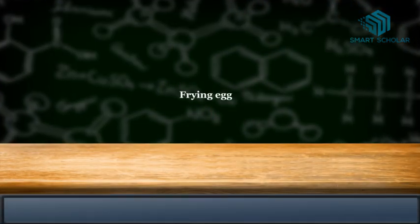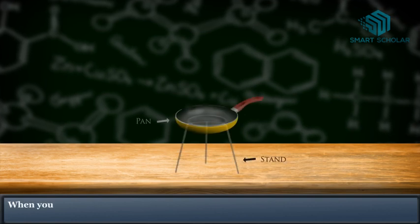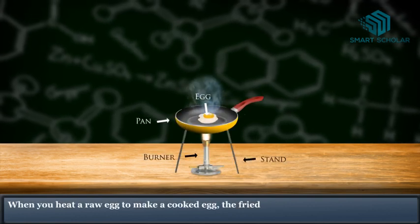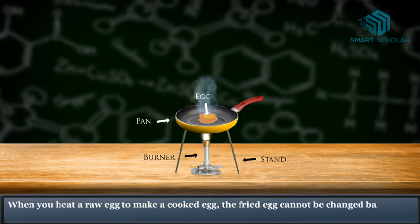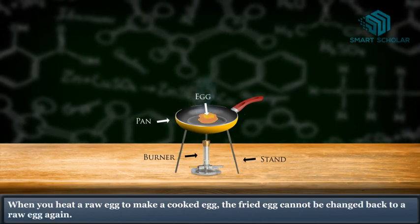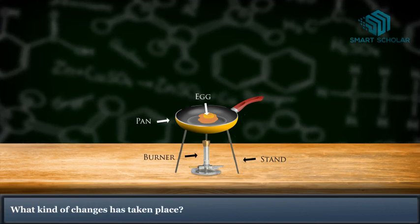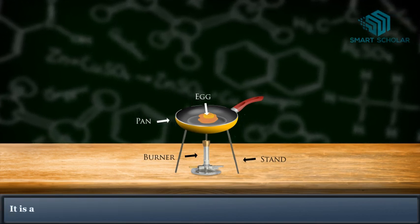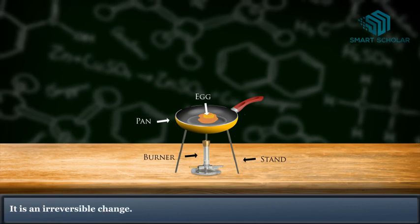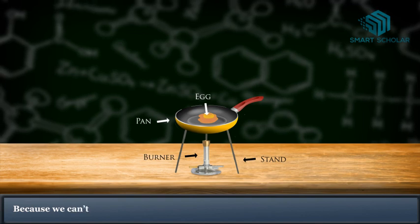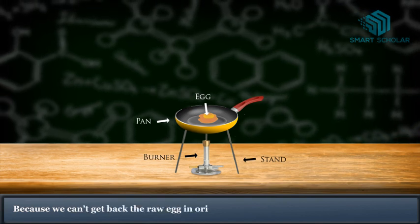A fried egg: When you heat a raw egg to make a cooked egg, the fried egg cannot be changed back to a raw egg again. What kind of change has taken place? It is an irreversible change because we can't get back the raw egg in its original form.